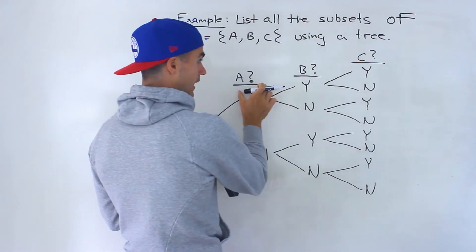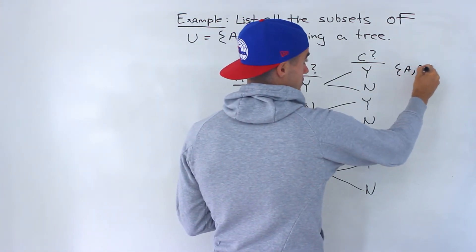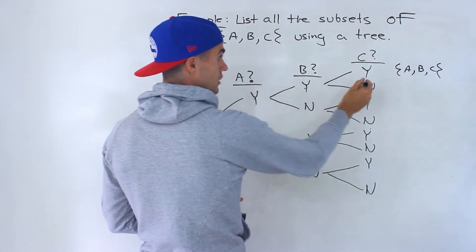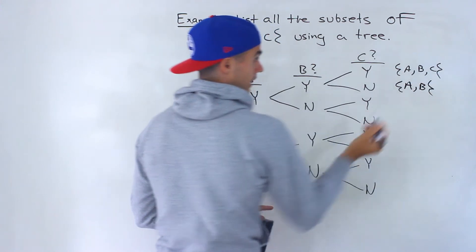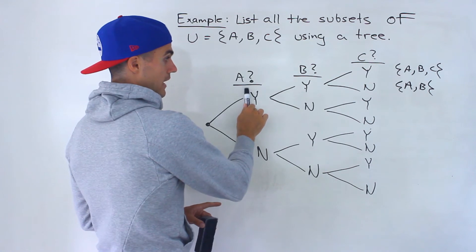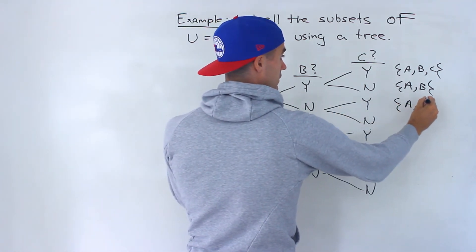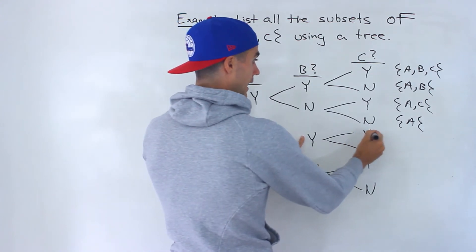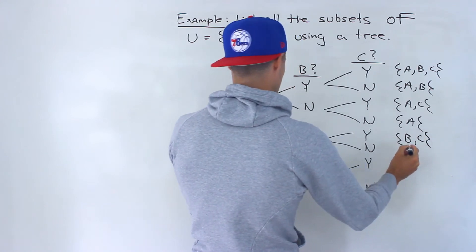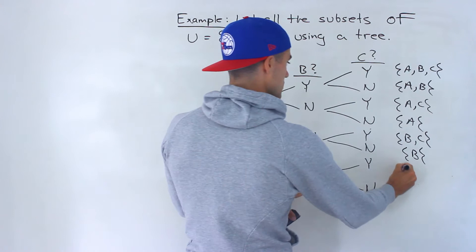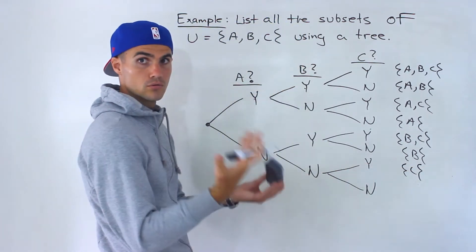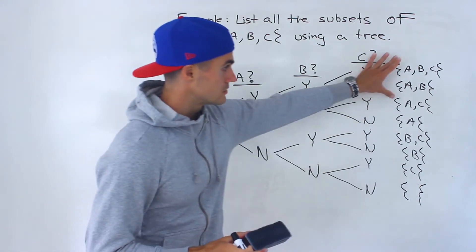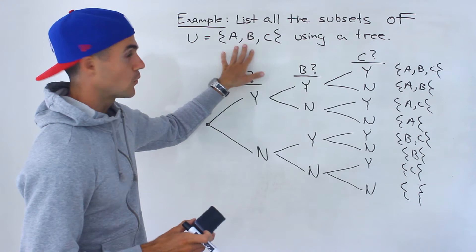The combination yes/yes/yes — all three elements present — gives us {A, B, C}, which is the original set. Yes/yes/no gives us {A, B}. Then we have {A, C} — yes for A, no for B. Then just {A} — yes for A, no for B, no for C. Then no for A, yes for B and C, giving {B, C}. Then just {B}. Then just {C}. And finally no/no/no — no elements — which is the null set. Those are all the subsets of these three elements.